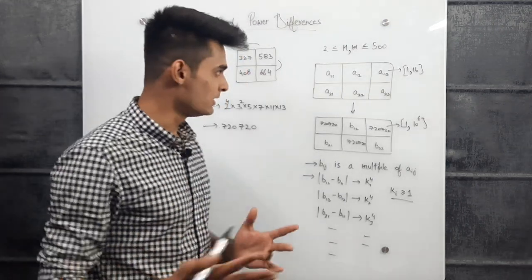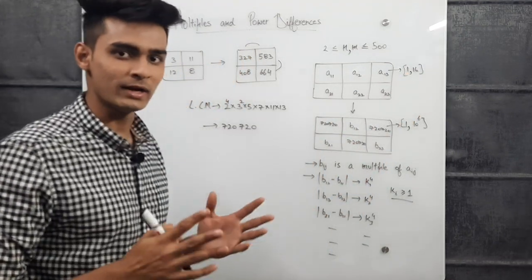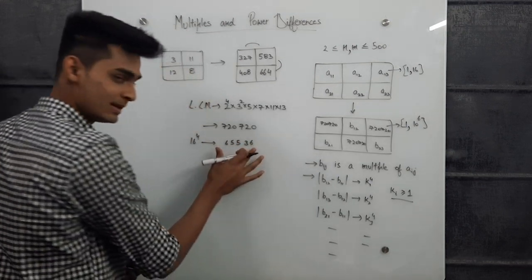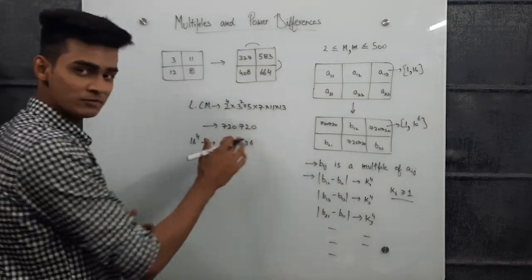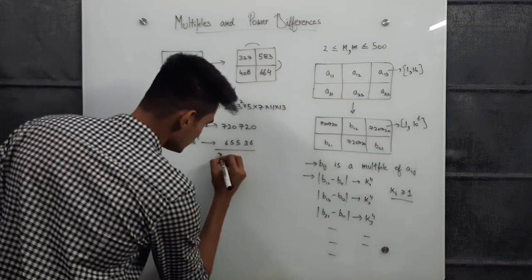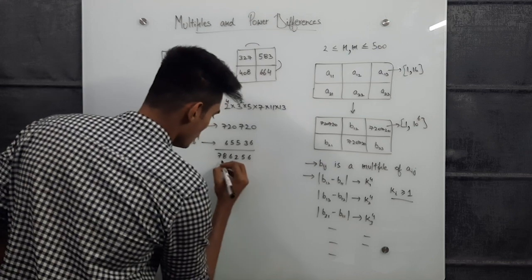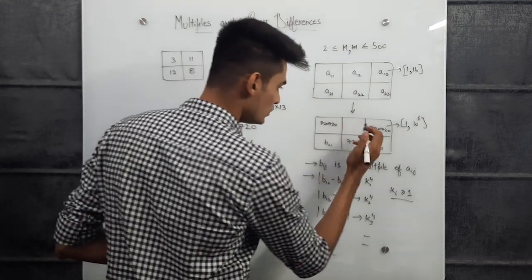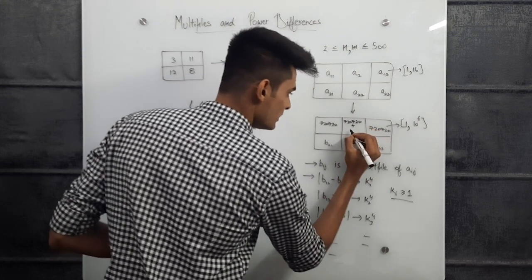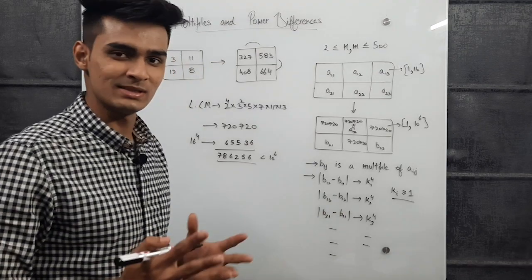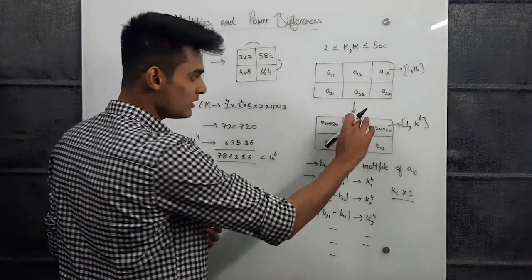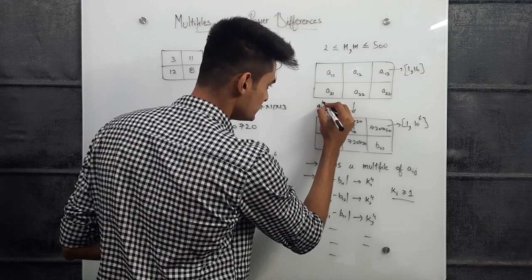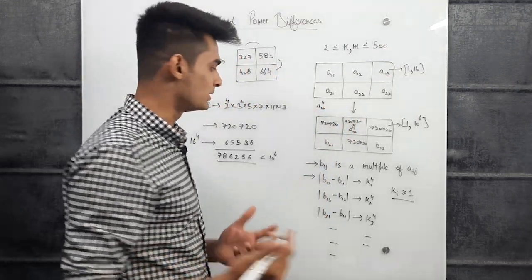For the remaining (non-LCM) cells, we note the maximum a_ij is 16, and 16^4 = 65536, which is less than 10^6. The sum 720720 + 65536 = 786256 is also less than 10^6. So for alternating cells, we set b_ij = 720720 + a_ij^4. This value is a multiple of a_ij, and the difference between adjacent elements becomes a_ij^4, which is of the form k^4.